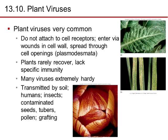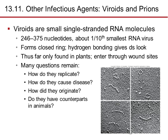Plant viruses are very common. They do not attach to cell receptors — instead they enter through wounds in the cell wall and spread through cell openings called plasmodesmata. Plants rarely recover and lack specific immunity. Many plant viruses are extremely hardy, transmitted by soil, humans, insects, contaminated seeds, tubers, pollen, and grafting. Viroids are small single-stranded RNA molecules affecting plants — 246 to 365 nucleotides, about one-tenth the size of the smallest RNA virus. They form closed rings, and hydrogen bonding gives them a double-stranded appearance. They enter through wound sites. Many questions remain: how do they replicate, how do they cause disease, how do they originate, and do they have counterparts in animals?